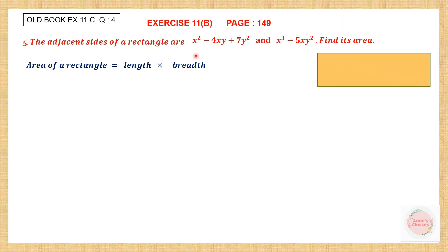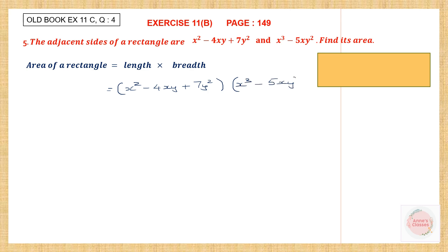So we can take one of these as the length and the other as the breadth. Let's substitute in this formula. Area of a rectangle equals length, so let's write x squared minus 4xy plus 7y squared as the length, and we are going to multiply this with the breadth, which is x to the power of 3 minus 5xy squared.